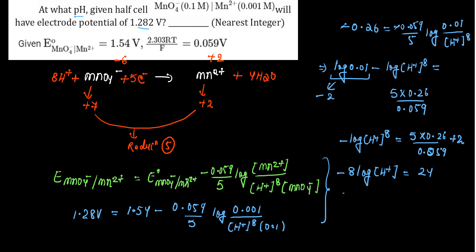Minus log of H plus you can take as pH. So 8 times of pH is equal to 24, and that means pH will be equal to 24 upon 8, that is 3. So pH for this cell will be equal to 3.